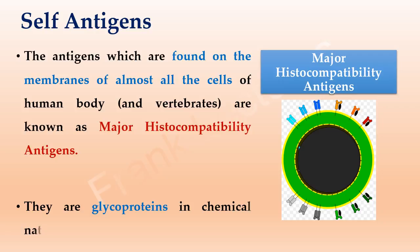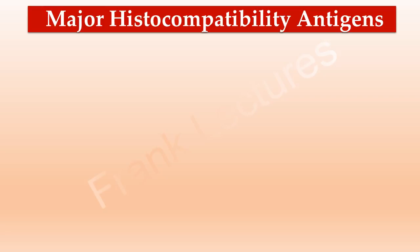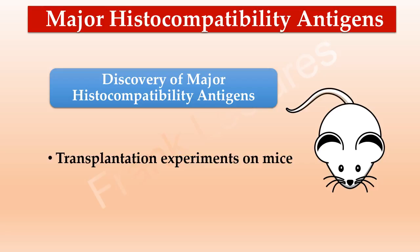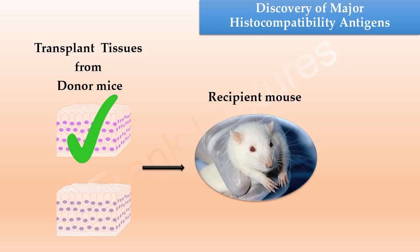Major histocompatibility antigens are also known as histocompatibility antigens. These antigens were discovered when scientists were doing transplantation experiments on mice. Scientists found that sometimes the transplant tissue from the donor mouse was accepted by the recipient mouse, but at other times it was rejected by the recipient mouse.